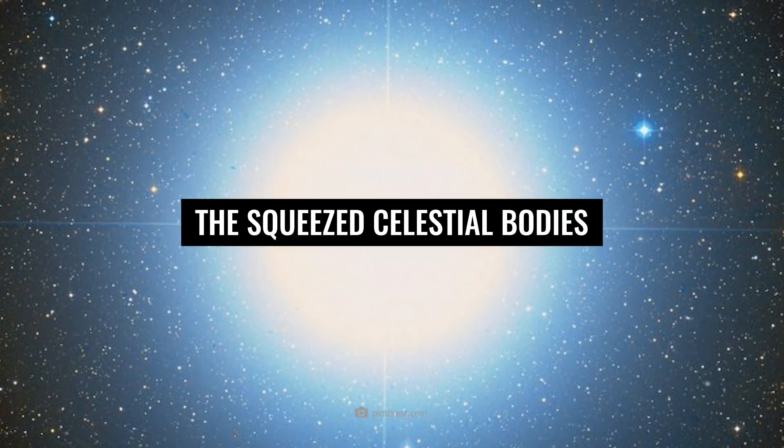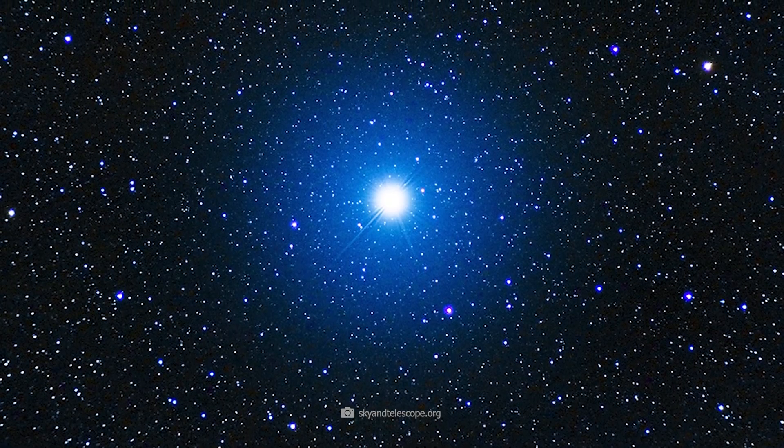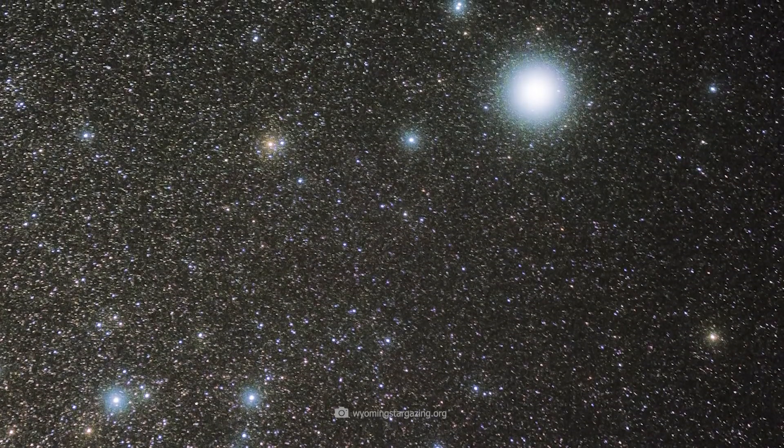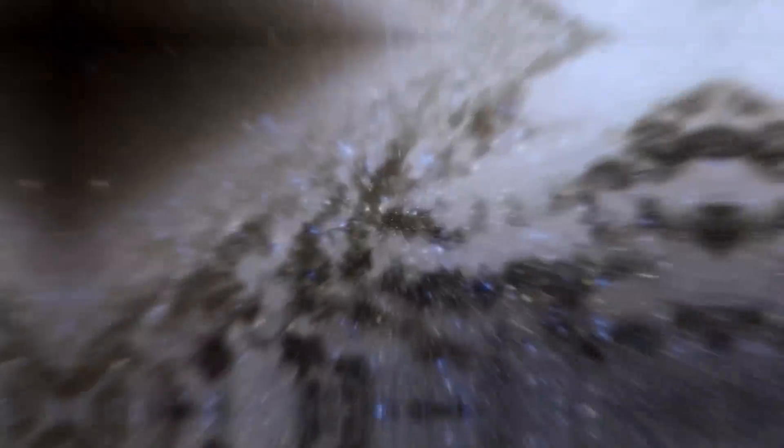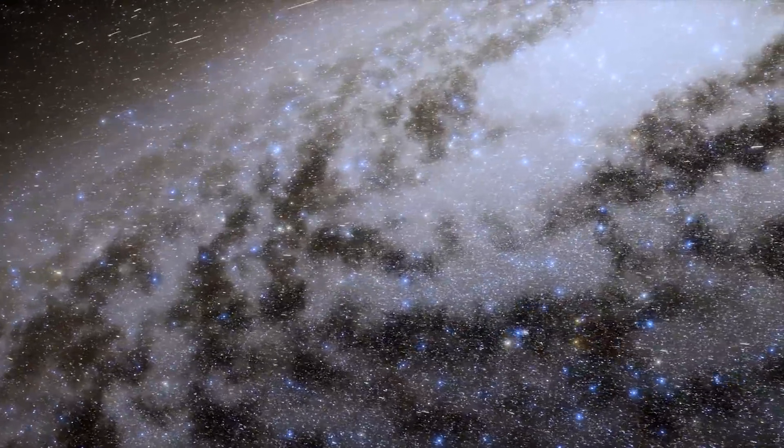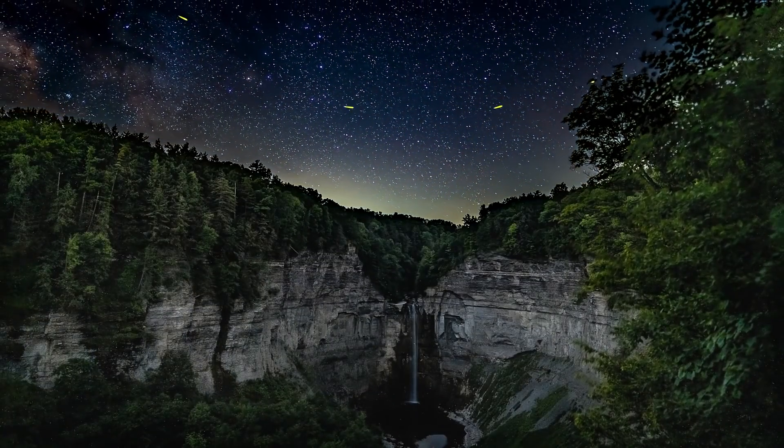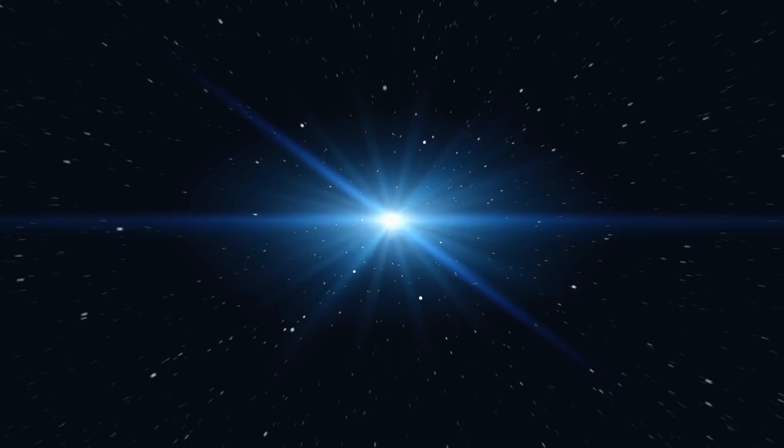The Squeezed Celestial Bodies. You've probably already seen the star called Vega with your own eyes. The main star of the constellation Lyra is the brightest object in the northern sky. In the list of all the brightest stars in the firmament, Vega is in fifth place. Seen from our earthly point of view, the star seems to have no extraordinary characteristics except for its brightness.